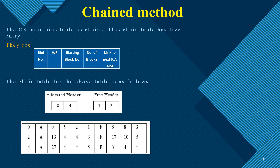Taking an example from the same table: slot number 0 starts at address 0 with a block size of 5, and is allocated. It points to slot 2, which also is allocated with starting address 13 and file size 4. Slot 2 points to slot 4, which is allocated with starting address 37 and file size 4. After slot 4, there are no more allocated files, represented by an asterisk. Similarly, the free allocation list assigns free partitions — Partition 1 and Partition 3 are free.